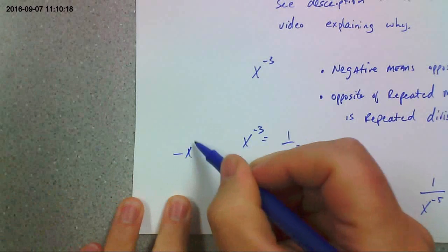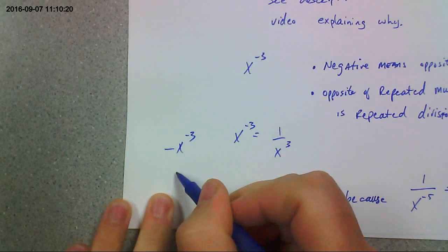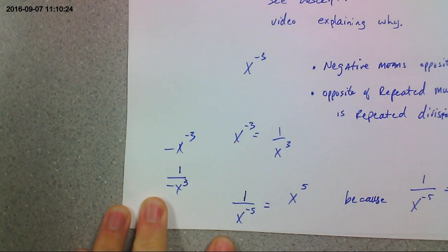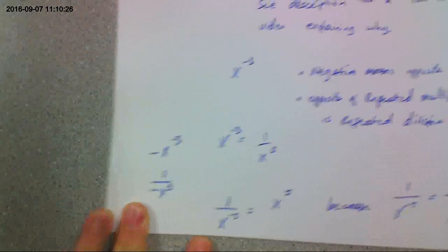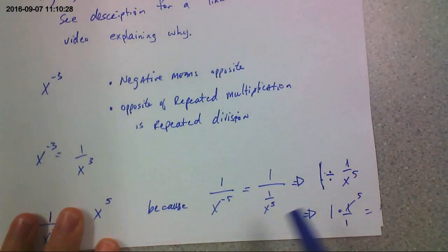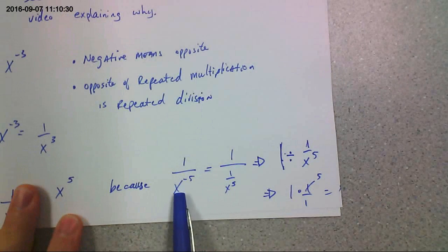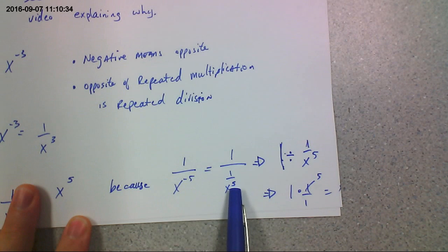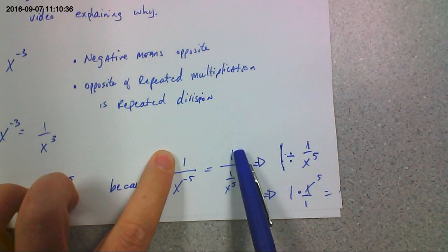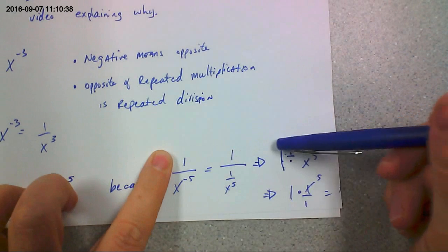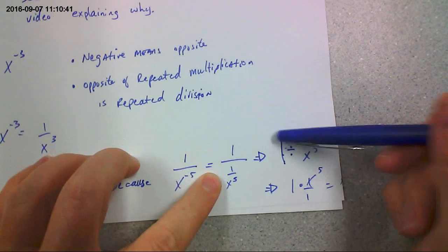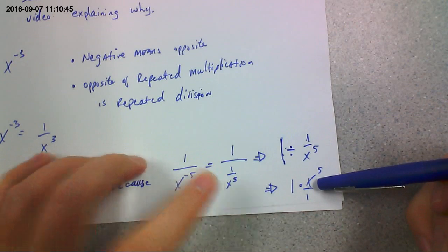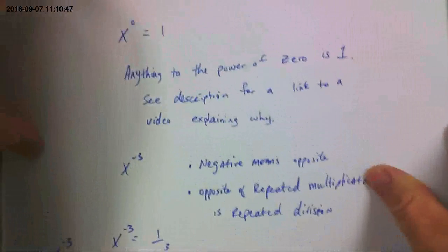Don't change the sign of the base. Like if it was something like this, that would be 1 over negative x cubed. Right? So you don't change the sign of the base. You change the sign of the exponent. Now, the reason this works is because 1 divided by x to the negative fifth. Well, x to the negative fifth is 1 over x to the fifth. Right? And we're dividing that into 1. So we're dividing 1 by 1 over x to the fifth. See? 1 divided by 1 over x to the fifth. And when you divide, you multiply by the reciprocal. And that's just x to the fifth. Okay.